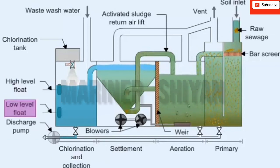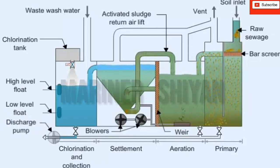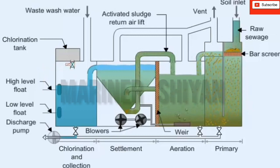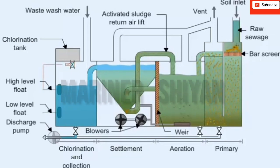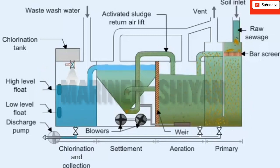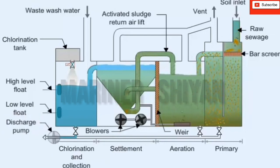Two float switches in the final section control the discharge pump. As the tank fills, the top float switch starts the pump. When the low-level float switch stops the pump, it simultaneously opens a solenoid valve in the water supply line to the hypochlorinator. In passing through the chlorinator, the water forms a sterilizing solution. A timing device on the solenoid valve allows the correct amount of solution into the treatment tank to deal with the next charge.